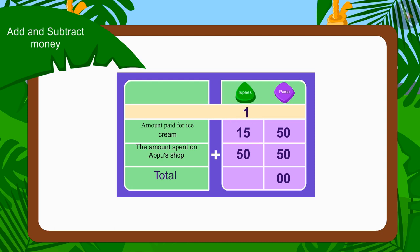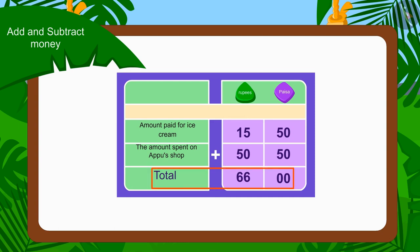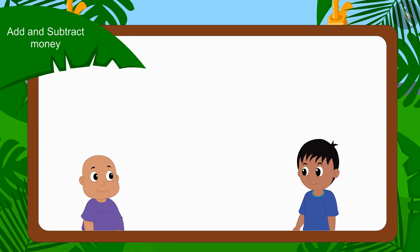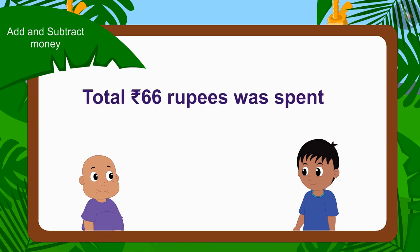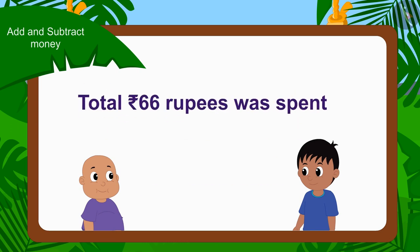And now, how much paise are left with us? Zero paise. Children, now can you add the total number of rupees? Well done, children — this is absolutely correct: 66 rupees in total. We have used addition to find these answers. In this way, Raju and Bablu spent a total of 66 rupees.